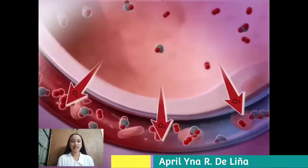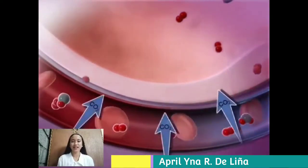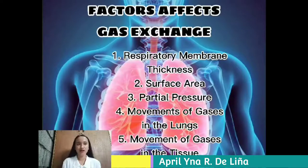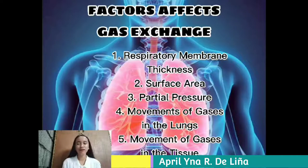Blood transports gases with hemoglobin, which is the carrier of oxygen. Hemoglobin is a protein in red blood cells that carries most of the oxygen in the blood. There are several factors that affect gas exchange: respiratory membrane thickness, surface area, partial pressure, movement of gases in the lungs, and movement of gases in the tissue.